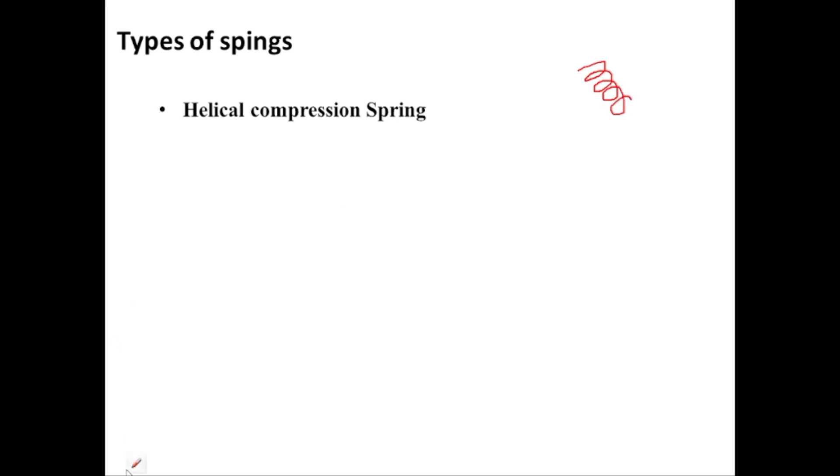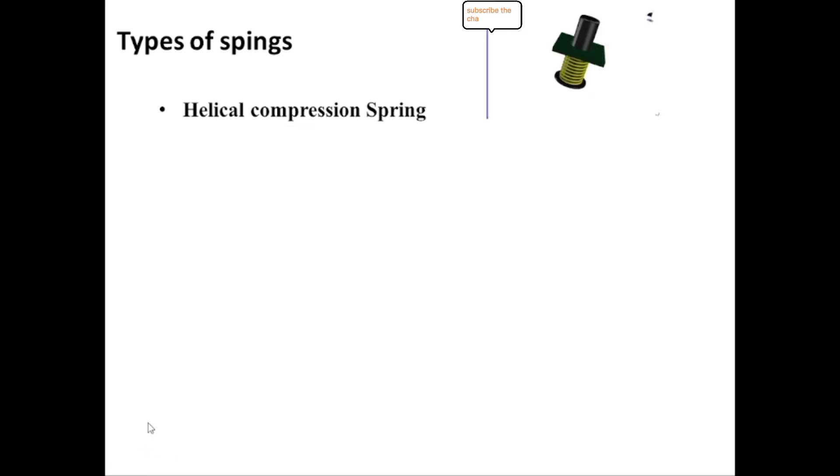The first type is the helical compression spring. This spring is helical in nature, meaning its shape is like a coil. Compression means that when force is exerted on it, it will be compressed and its length will decrease. You can see in the animation how it is compressed.